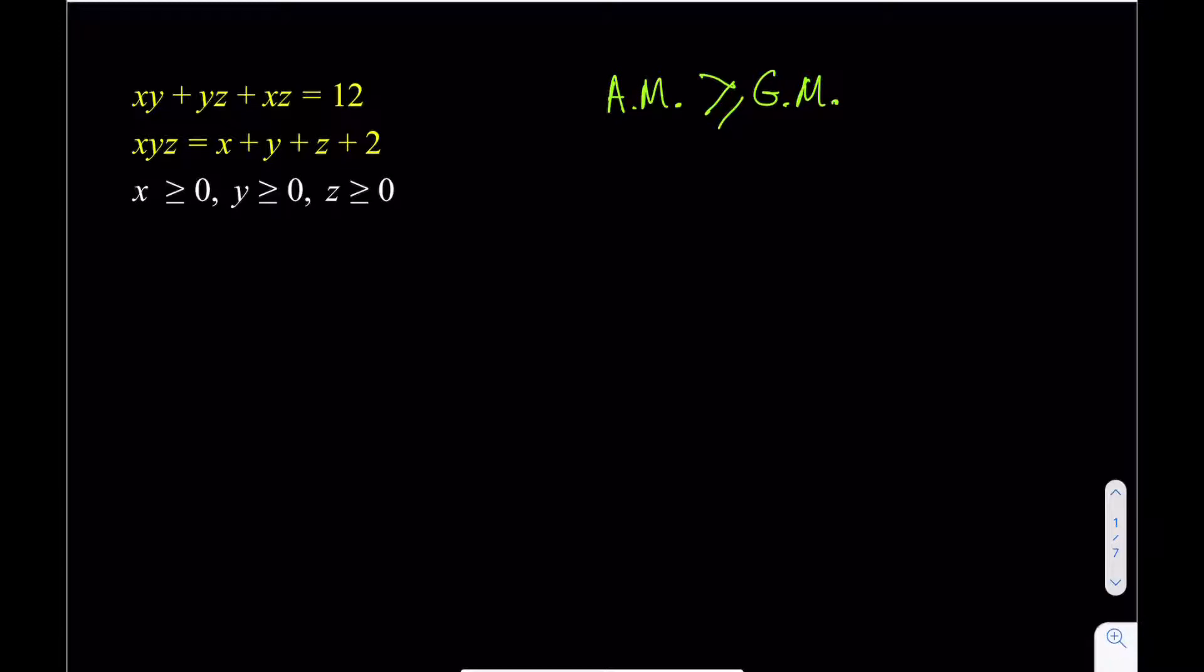So, we're going to start with these three numbers here. The arithmetic mean of XY, YZ, and XZ, which is their sum divided by 3, needs to be greater than or equal to their geometric mean, which is the cube root of their product.